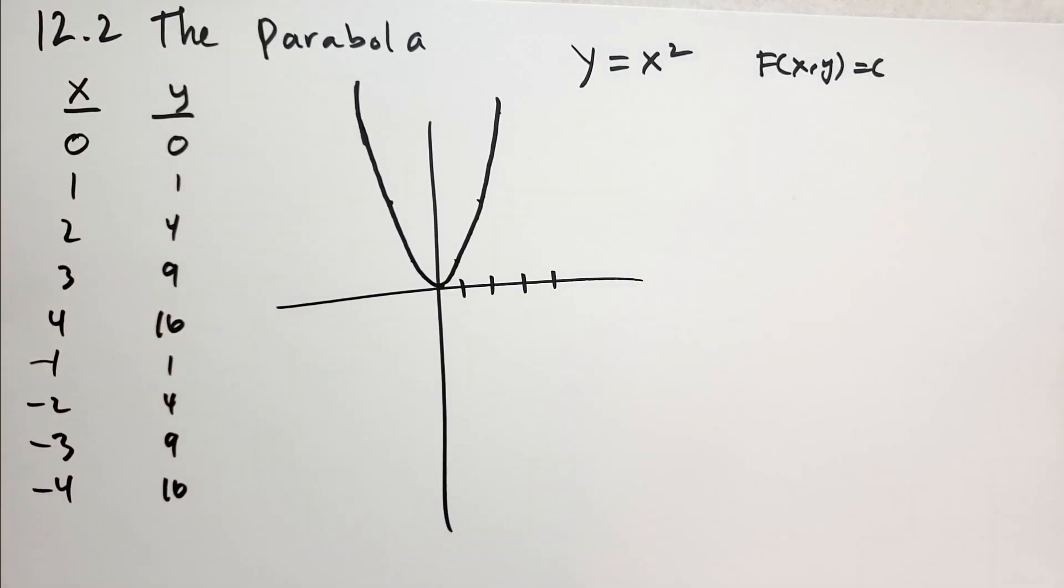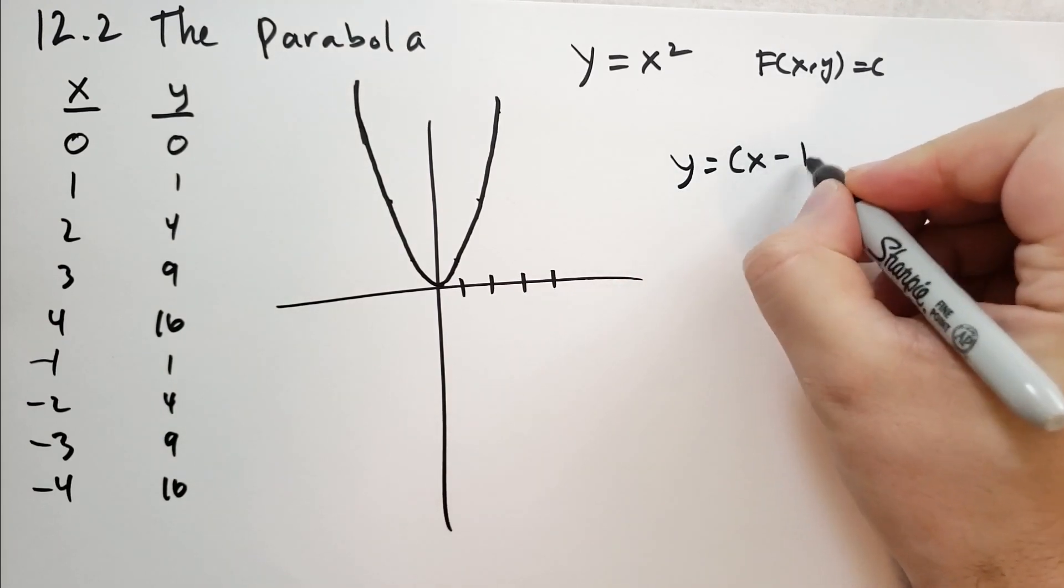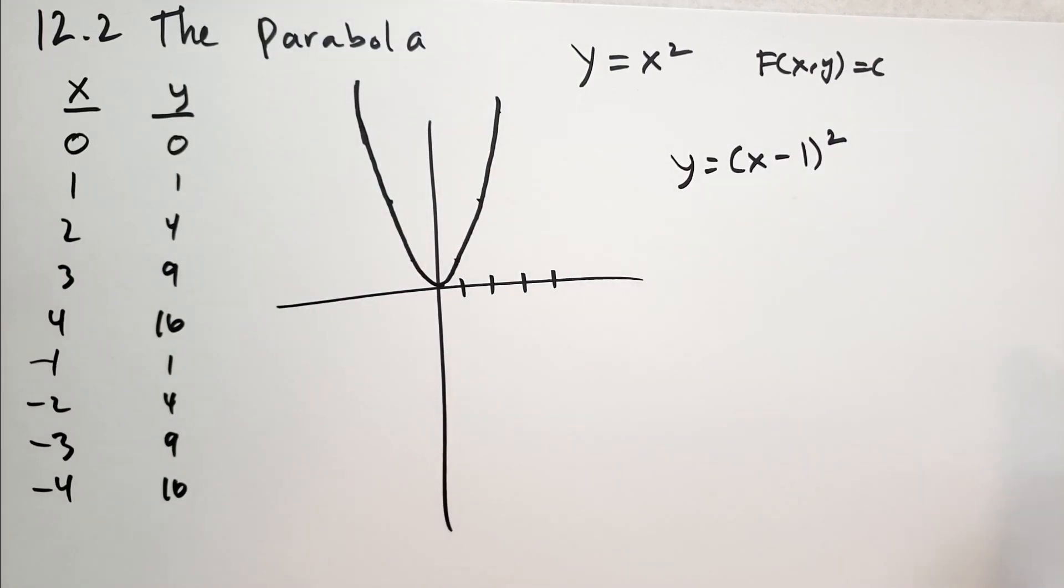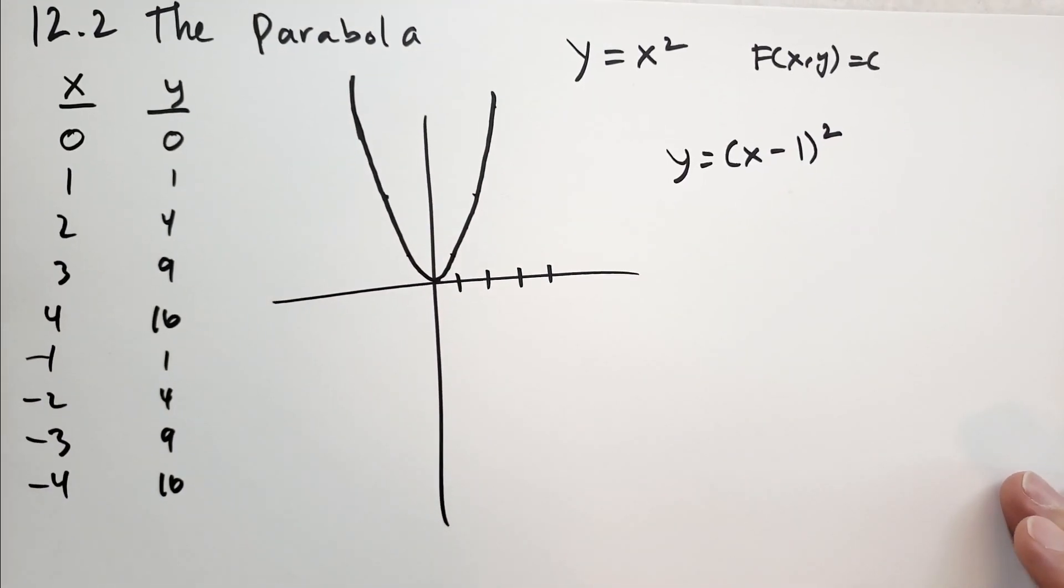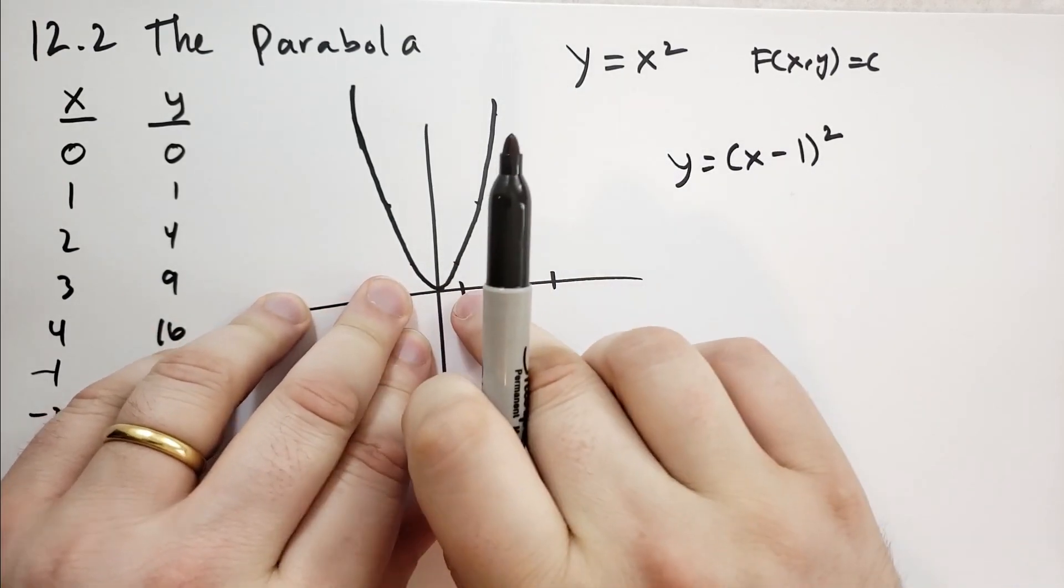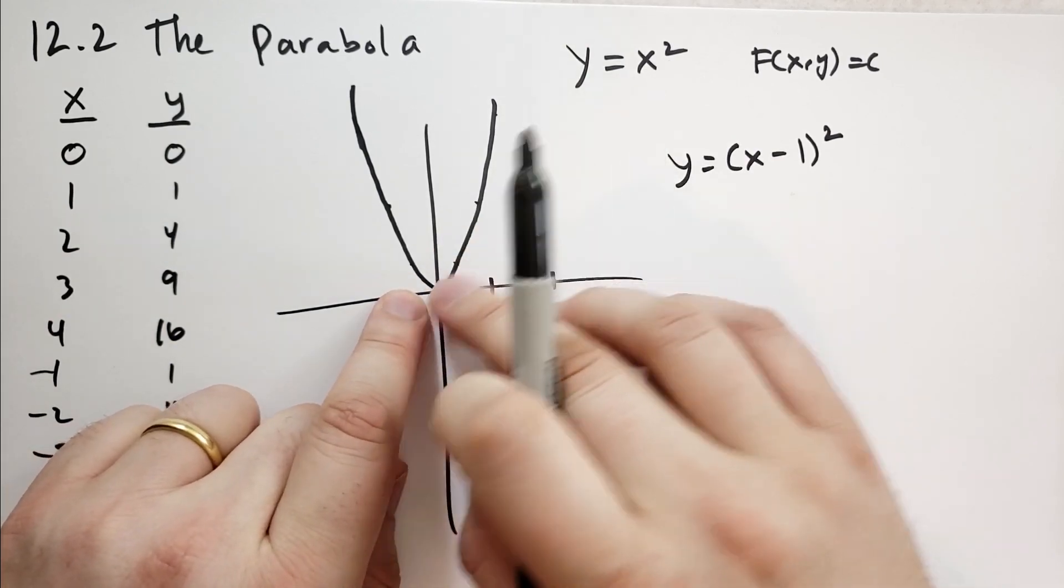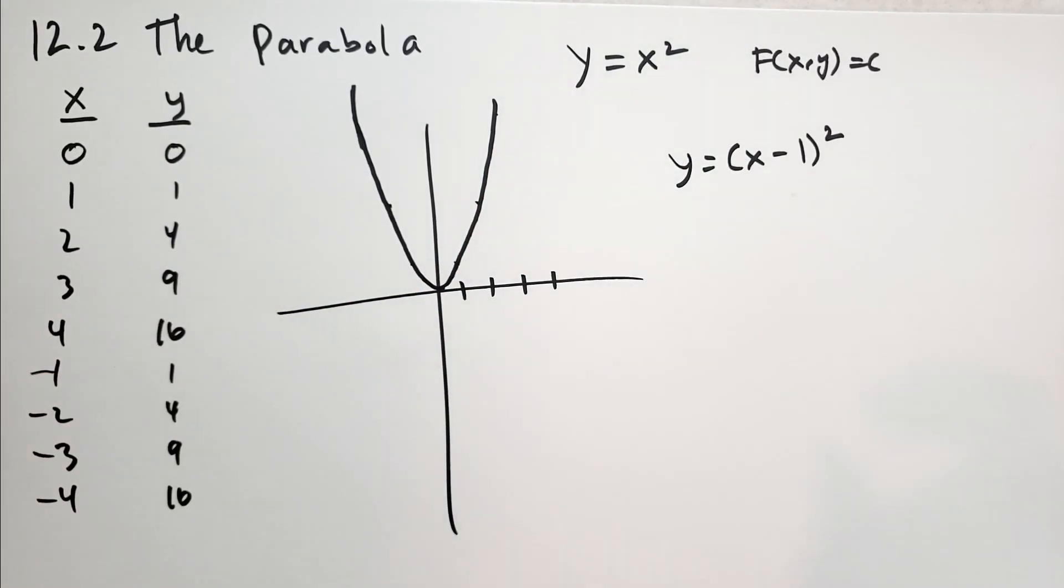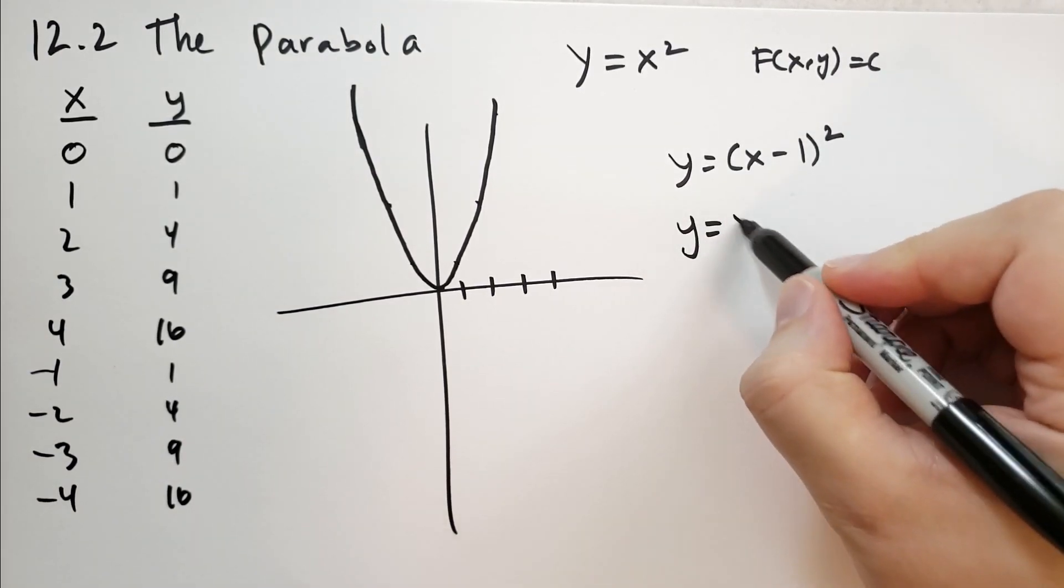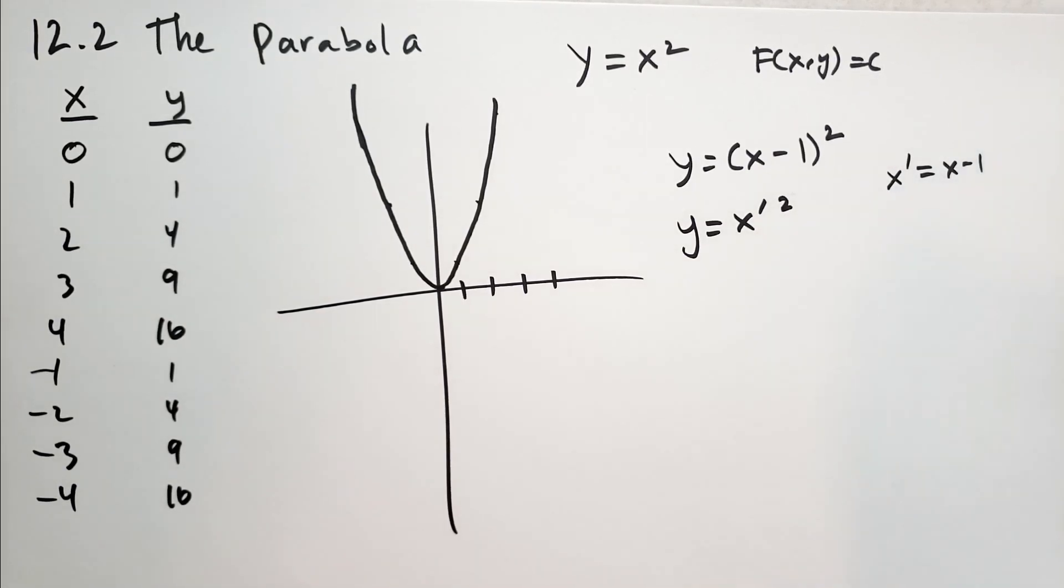Now, what happens when we have the graph y equals (x minus 1) squared? This is the key idea behind this whole chapter. We have already graphed y equals x squared and we're never going to have to do this again. We're going to take this graph and move it around. We'd like this to look like x prime squared, where x prime would be x minus 1.